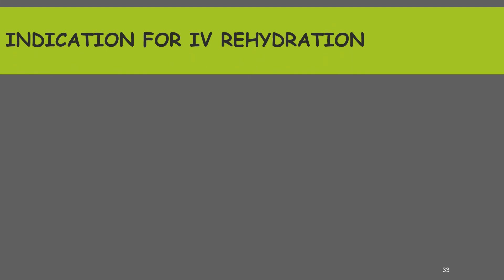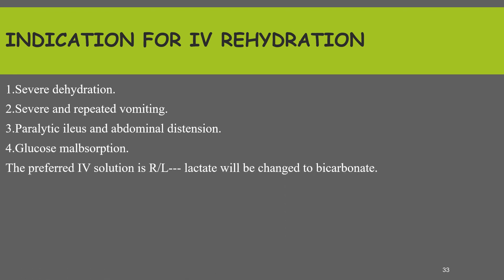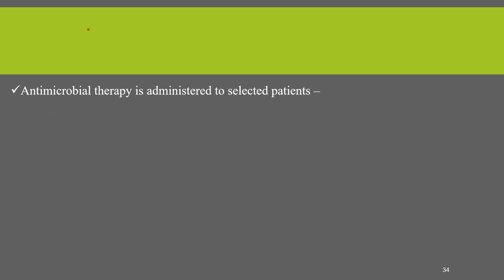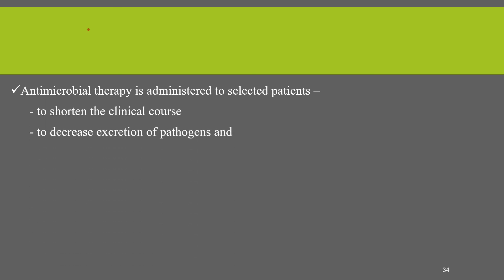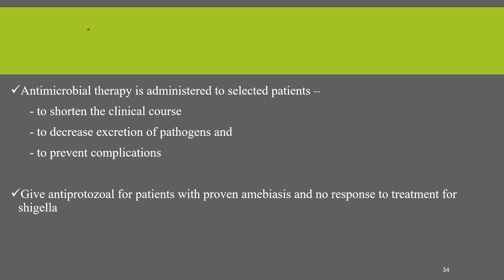Indications for IV hydration include severe dehydration, severe and repeated vomiting, paralytic ileus and abdominal distension, and glucose malabsorption. The preferred IV solution is Ringer's lactate because the lactate will be converted to bicarbonate and replace the lost bicarbonate. Antimicrobial therapy is administered to selected patients to shorten the clinical course, decrease excretion of pathogens, and prevent complications; anti-protozoal agents should also be given when indicated.